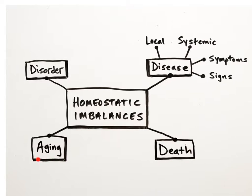Aging is a gradual decline in homeostasis over one's lifetime. Any abnormal structure or function of the body is described using the general term disorder. A disease is a more specific term for an illness, having a defined set of signs and symptoms. Diseases can be local, affecting a small region or one area of the body, like an ear infection, or they can be systemic and affect several areas or the entire body, like cardiovascular disease.